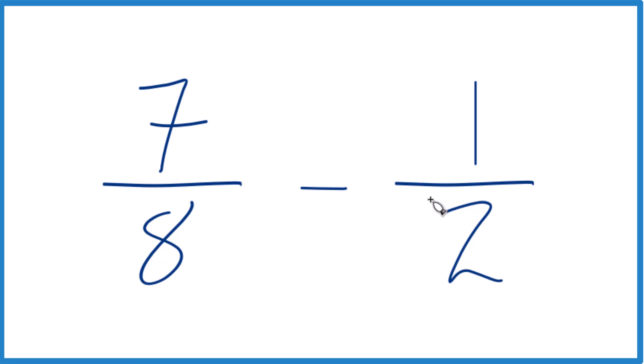What we need to do first when we're subtracting fractions or when we're adding fractions, we need to get a common denominator. So right now we have 2 and 8. We'd like these to be the same.